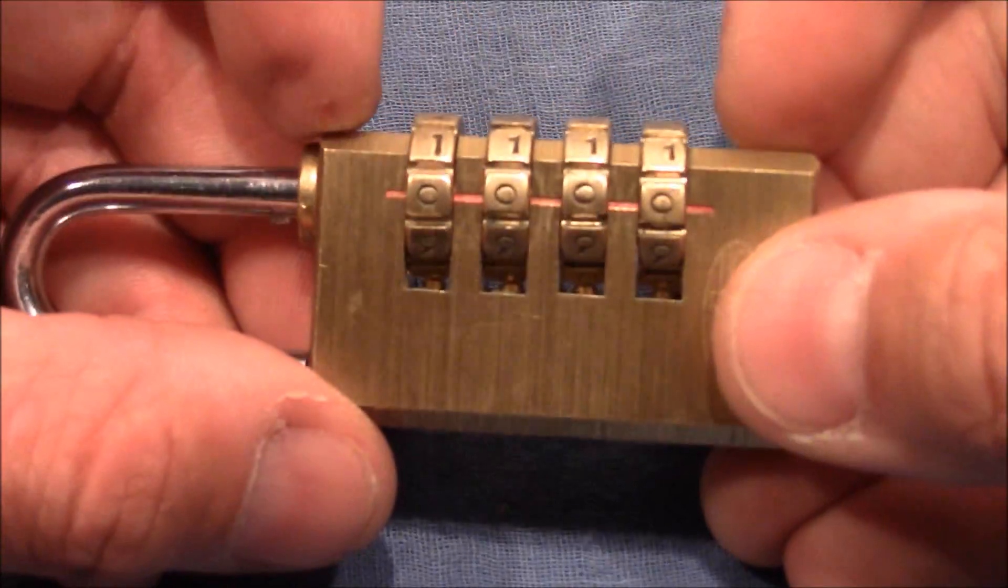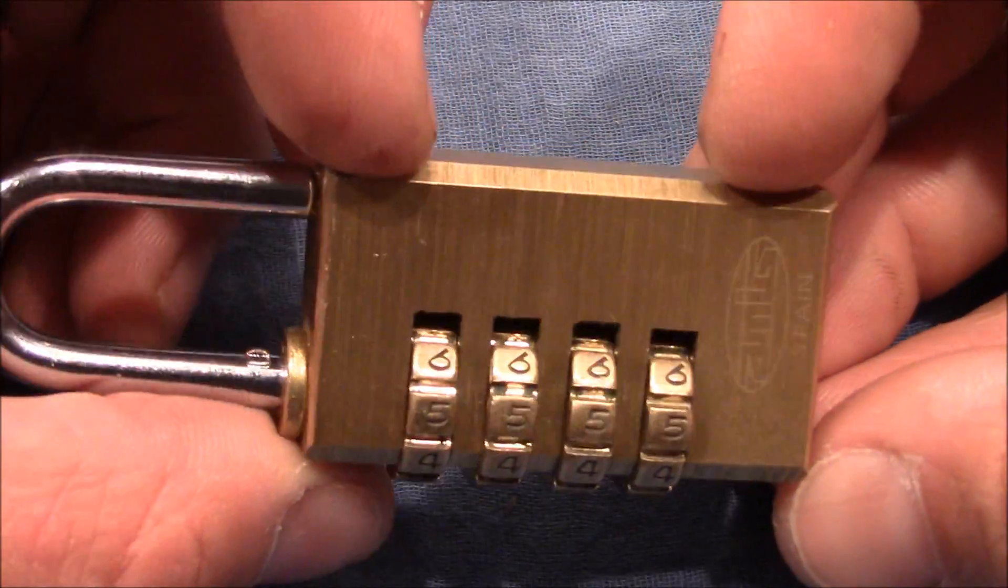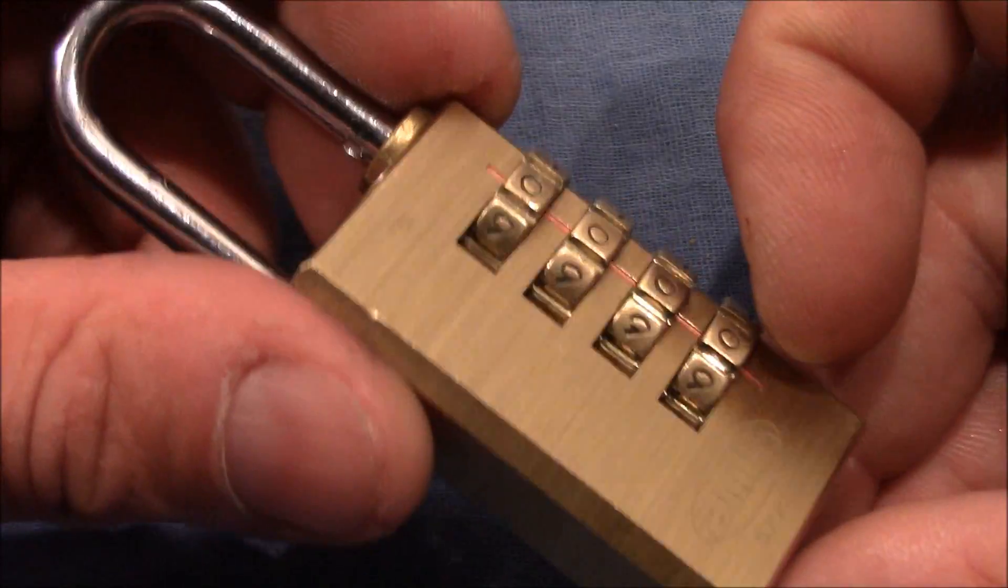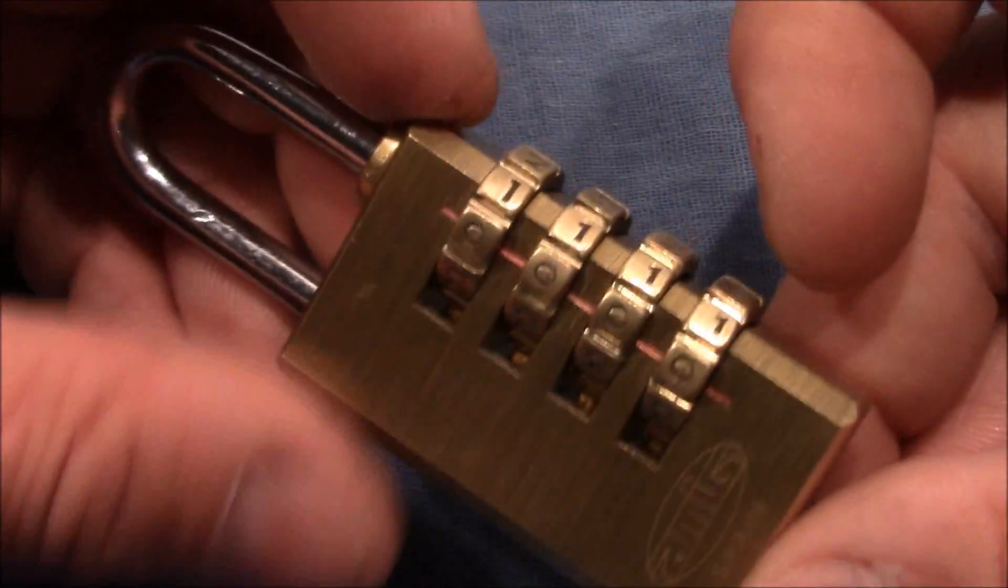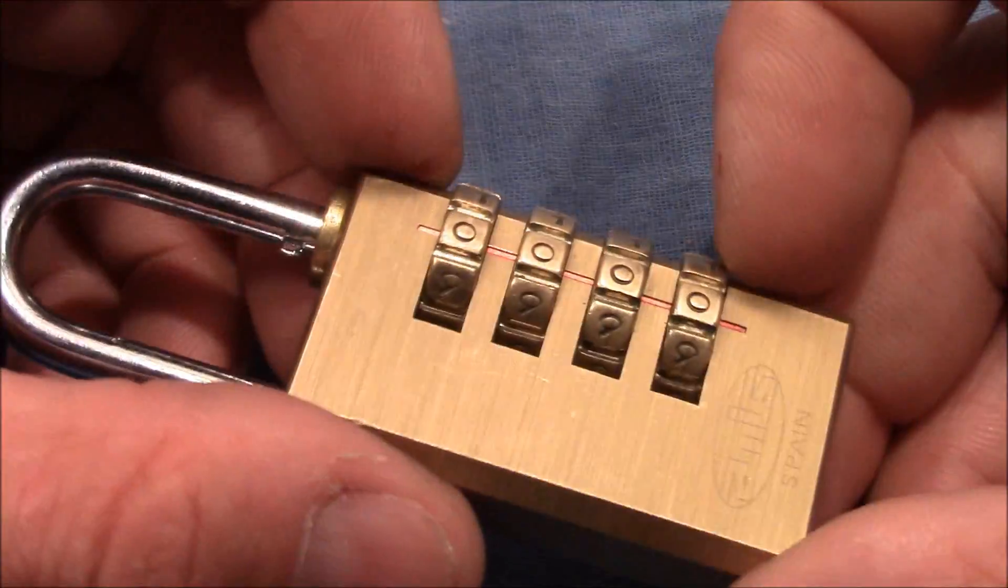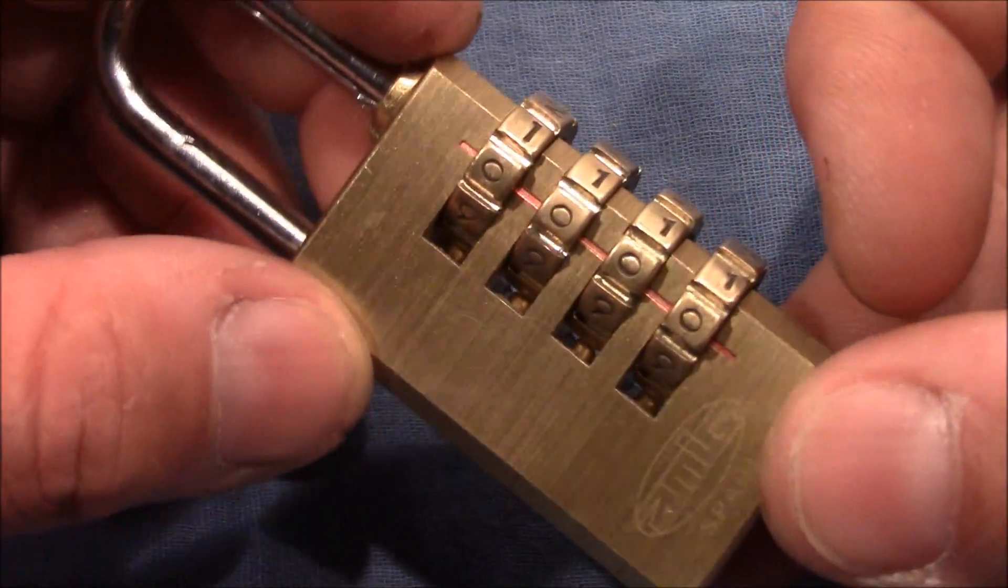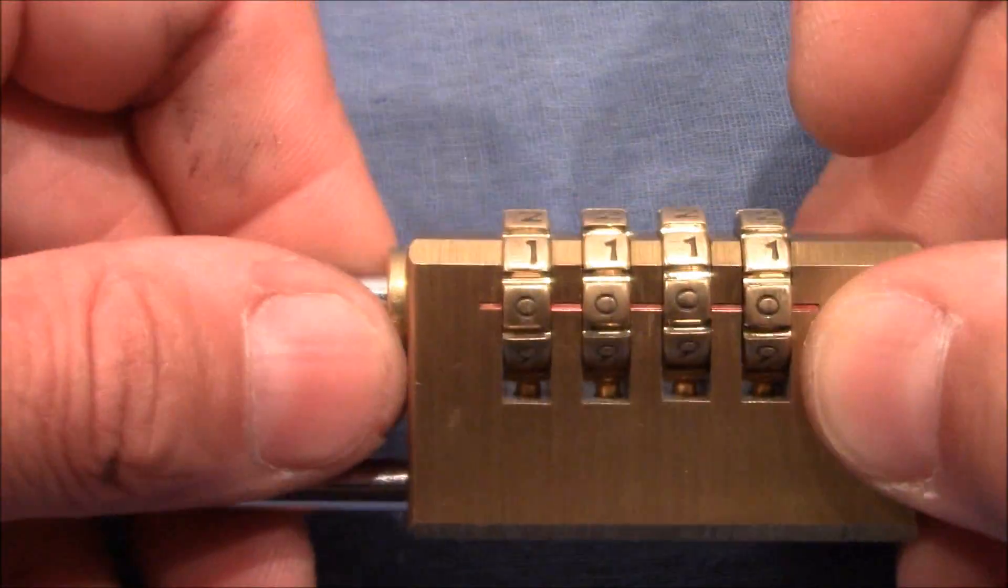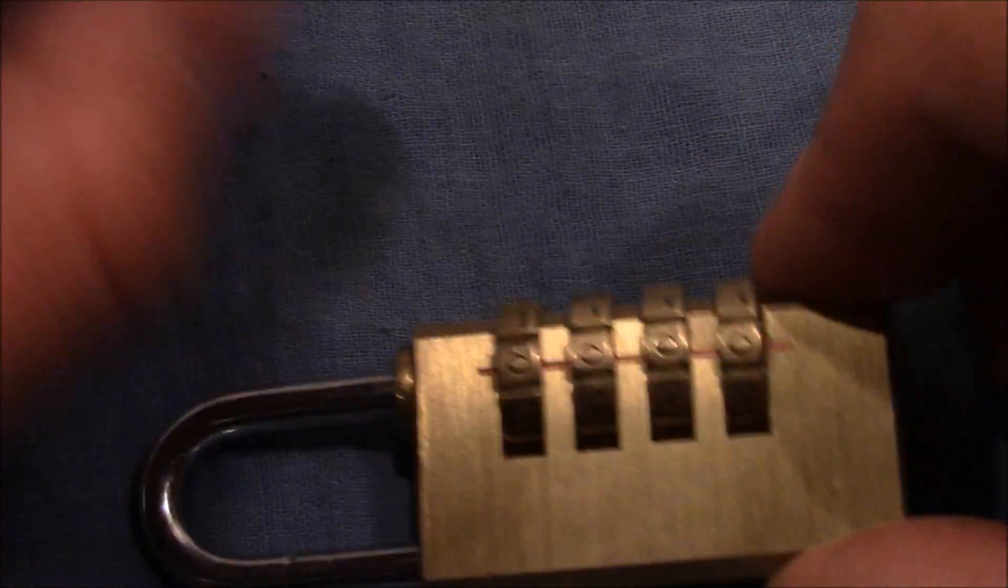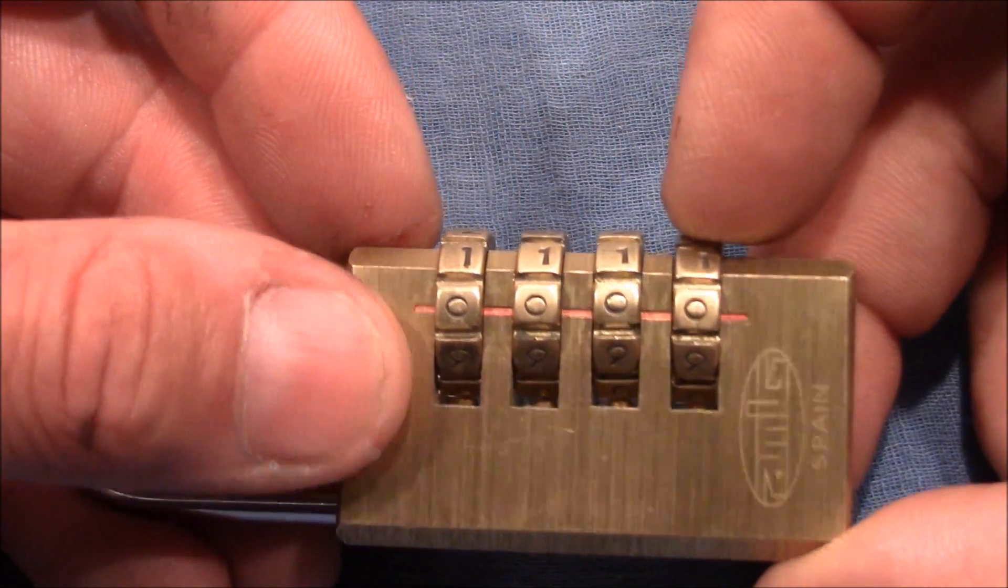So why can we actually decode such kind of locks? That's because every mechanical system has imperfections and these locks are made in a huge number. So the cost is an important factor and so the imperfections can be expected as not marginal. So when we pull on the shackle, we will cause one of these teeth to bind on a wheel. And the imperfection causes one wheel to bind first.